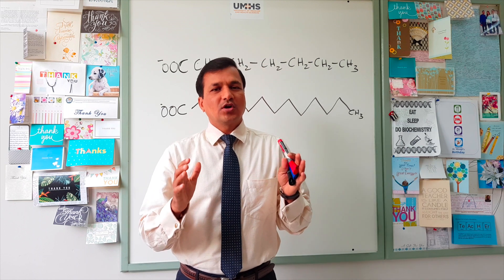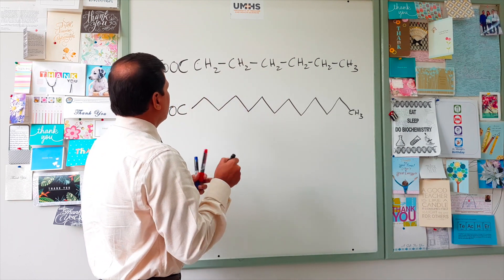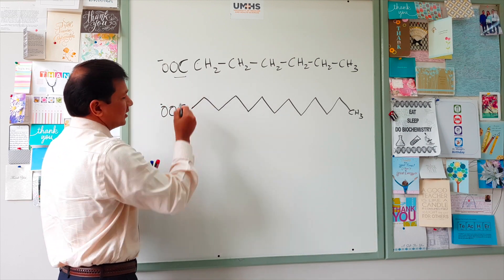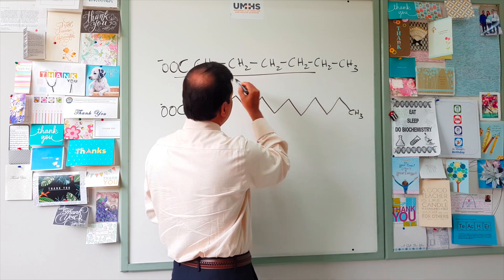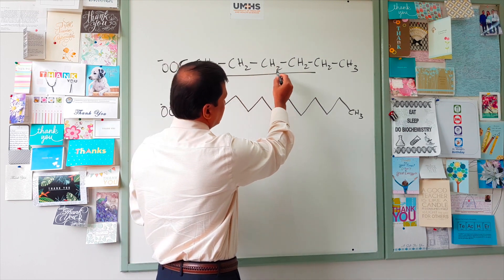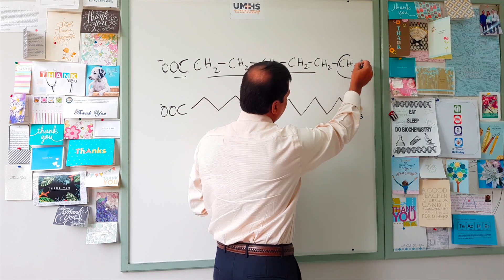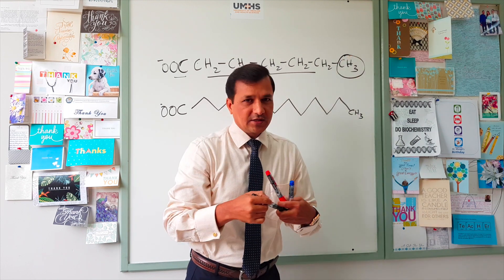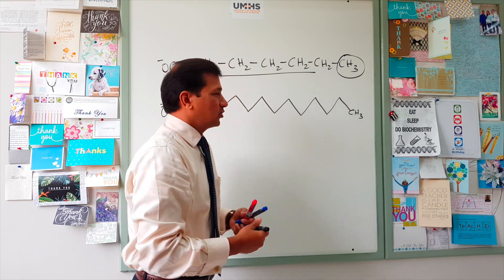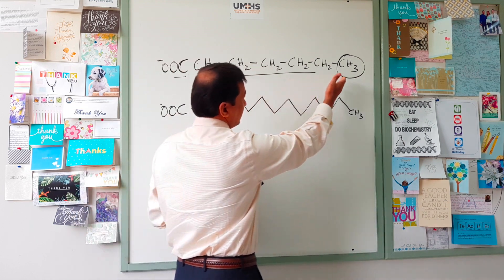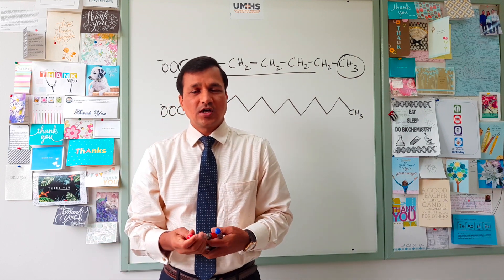Fatty acids are basically hydrocarbon chains. As I have written here, a fatty acid has a carboxyl group on the left side and then a hydrocarbon chain — CH2 CH2 CH2 CH2 CH2 — and then there is a methyl group all the way on the right side. So basically we have one carboxyl group in a fatty acid and one methyl group, with a hydrocarbon chain in between.